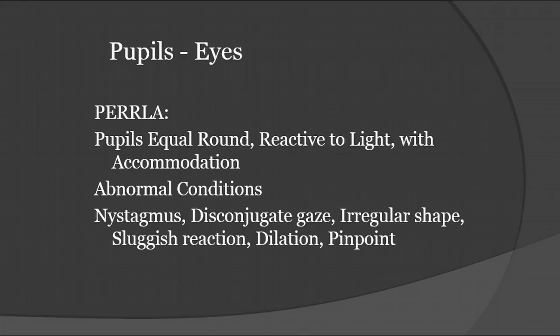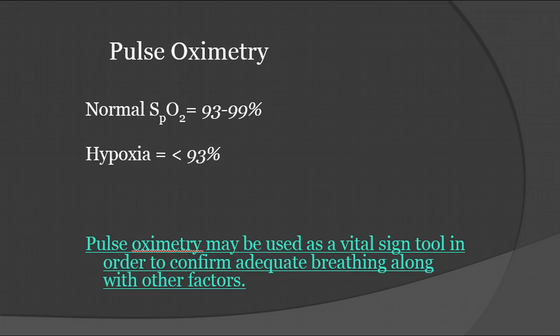Are there any abnormal findings such as nystagmus or disconjugate gaze? Is there an irregular shape? Do they have any eye trauma? Is there a sluggish reaction, dilation, or pinpoint pupils? Are the pupils blown out and dilated, or are they really small? Dilated pupils could indicate a CNS depressant; pinpoint pupils could indicate a CNS stimulant. Unequal pupils may indicate some kind of head injury. All of those things are important to note with regard to the way that the eyes look.